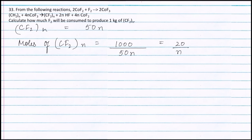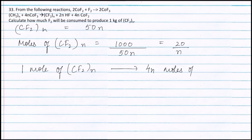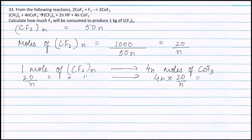As seen from the balanced chemical equation, 1 mole of (CF₂)ₙ is produced by 4n moles of COF₃. Therefore, 20/n moles of (CF₂)ₙ will be produced by 4n × 20/n, which equals 80 moles of COF₃.